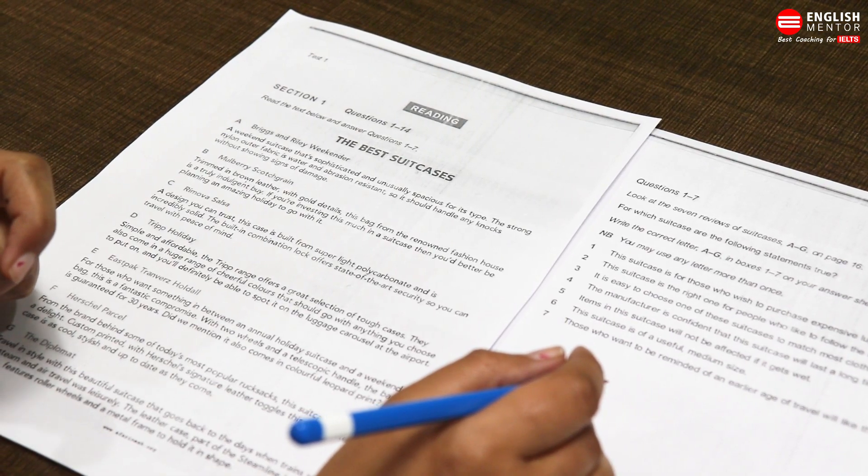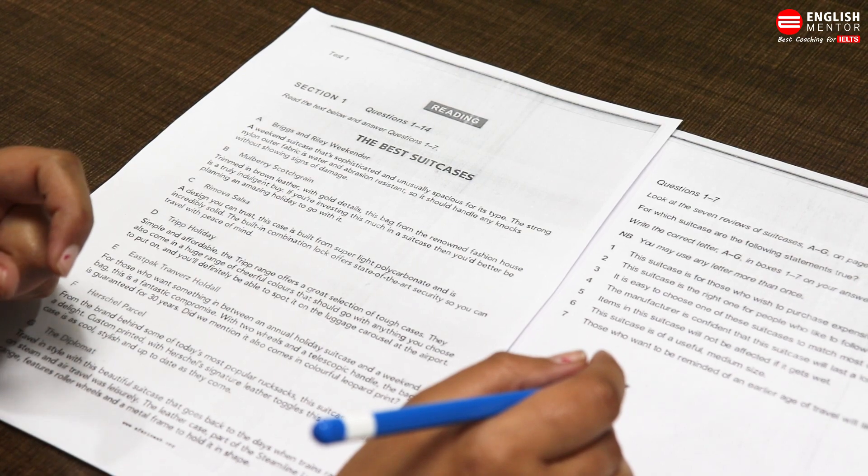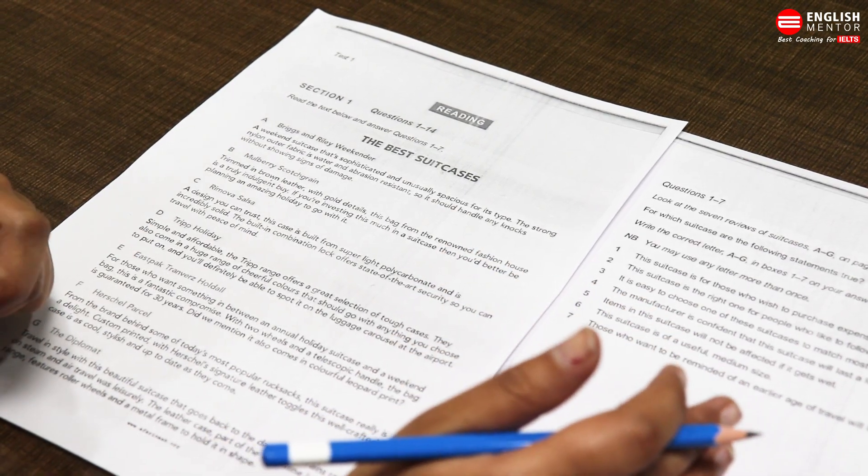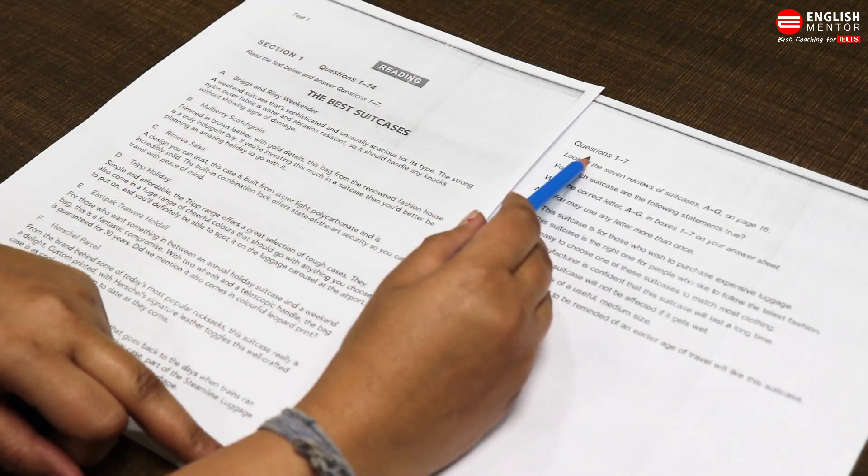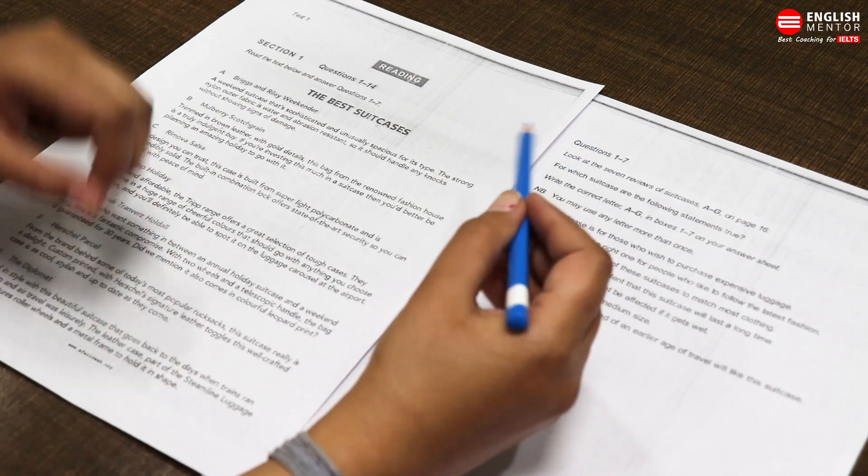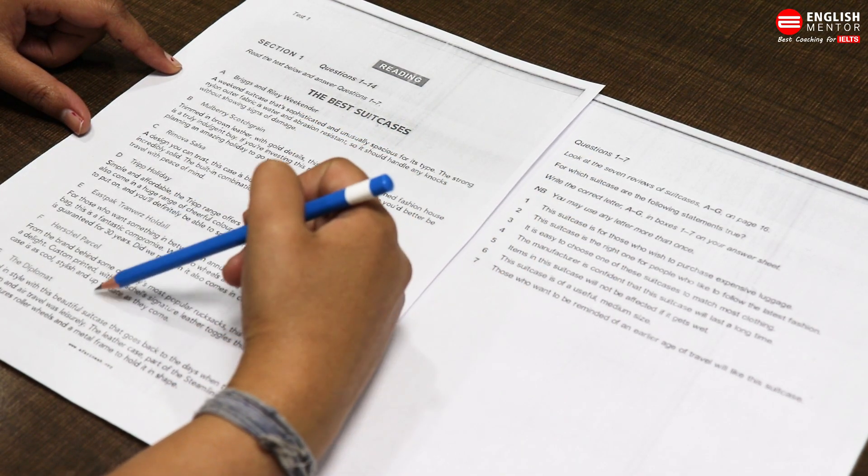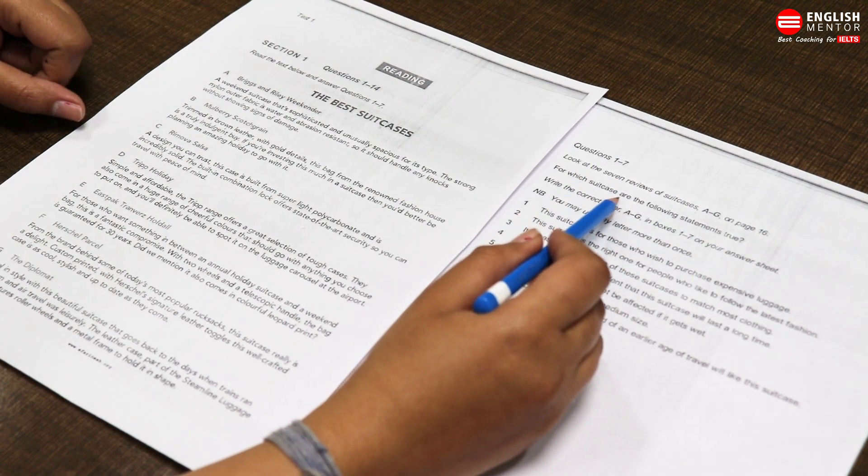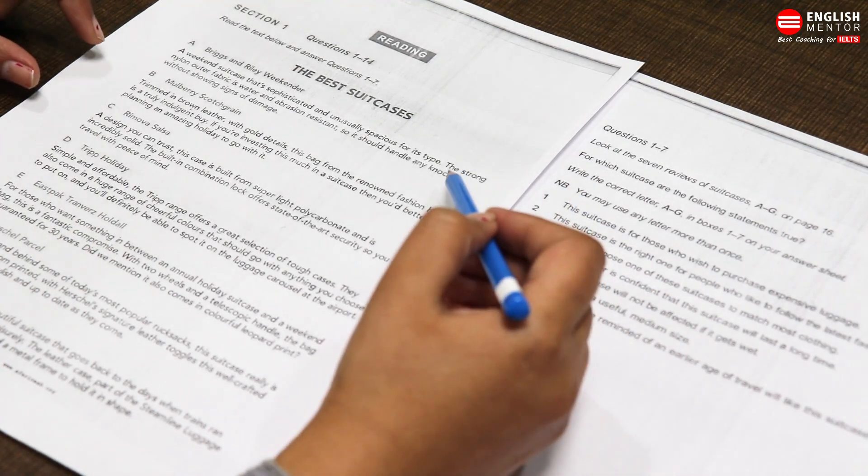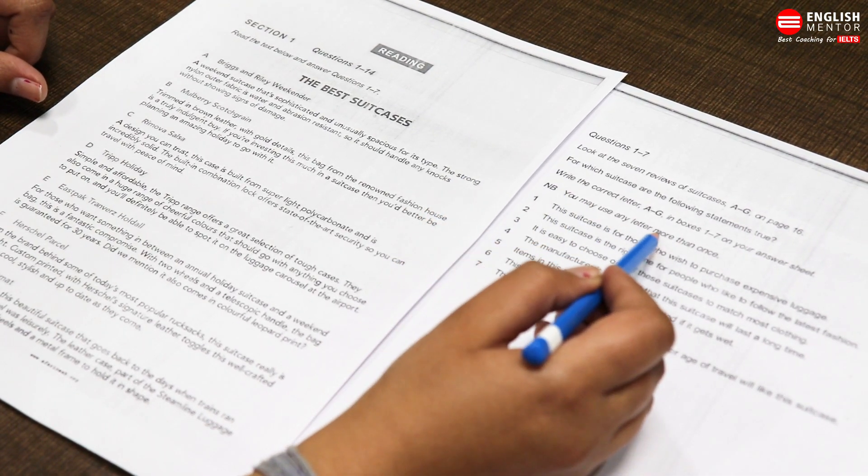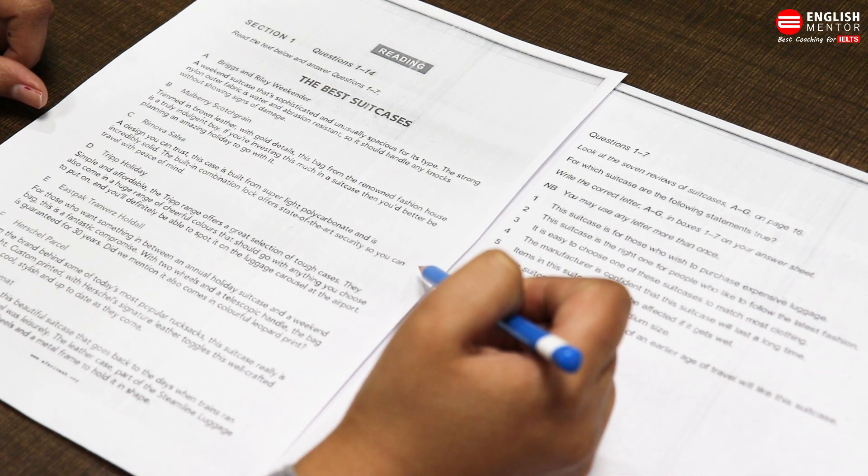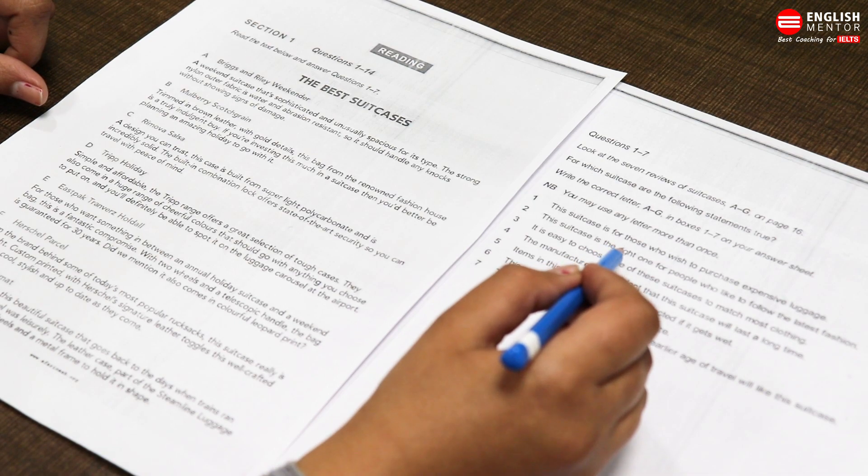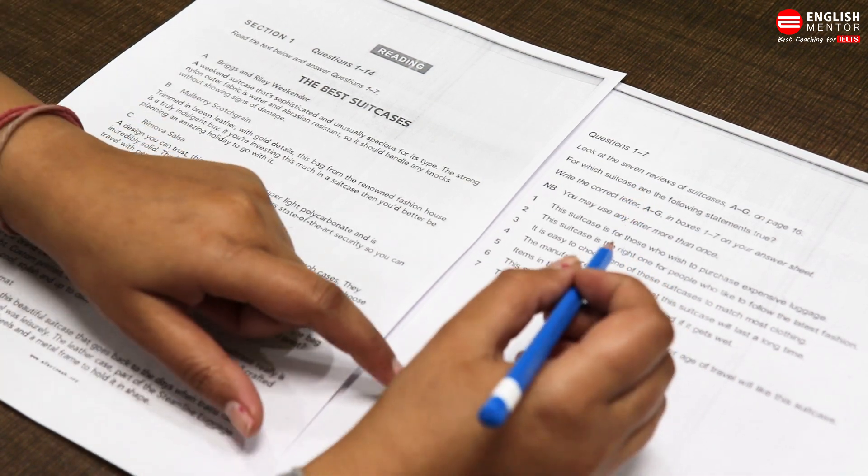Here I would like to tell you that RUP method means we have to read the questions of the particular section. If it is related to GT or academic, then we will read the questions of a particular passage first, not all the 40 questions together. Please keep this thing in your mind. Let's start with the reading. Question one to seven: Look at the seven reviews of suitcases A to G. For which suitcase are the following statements? You may use any letter more than once. This means you have to identify the name of the suitcases, and you can use any letter more than once.